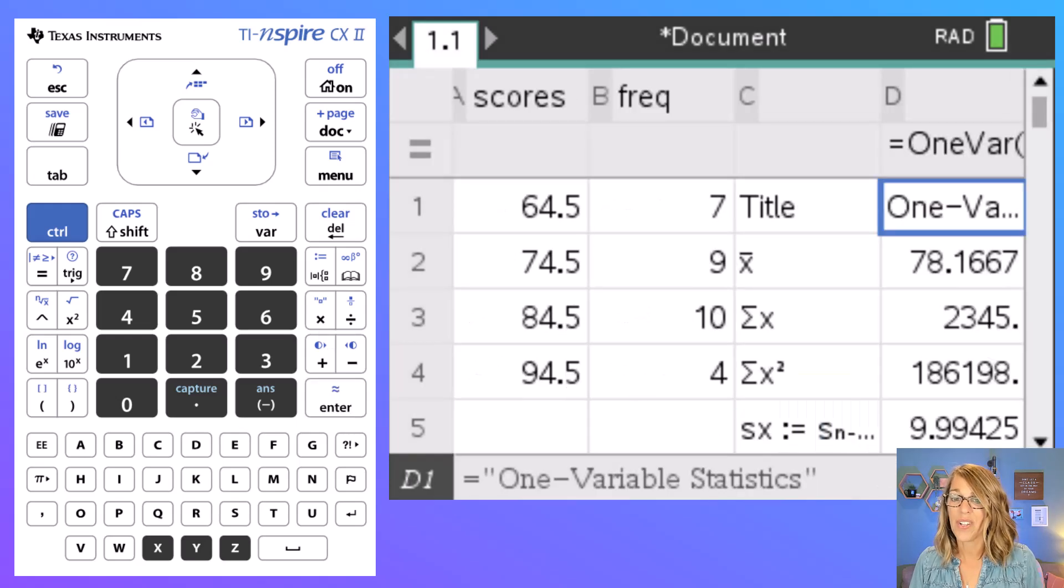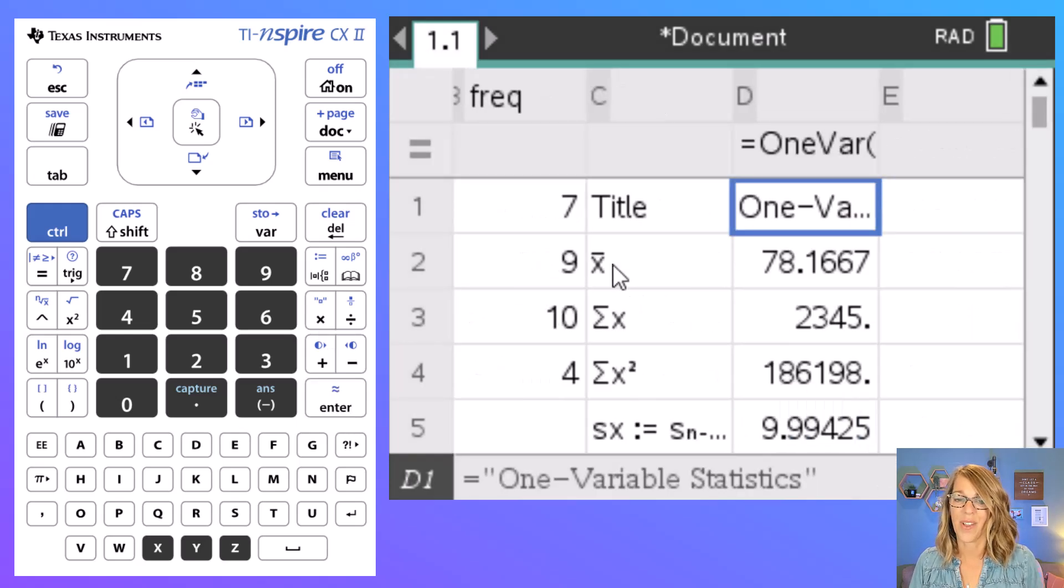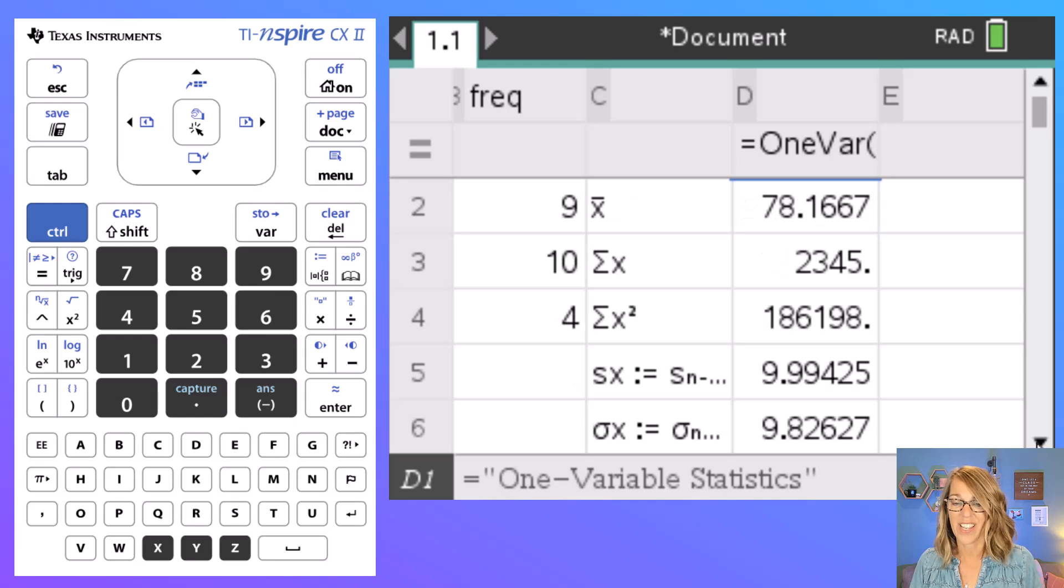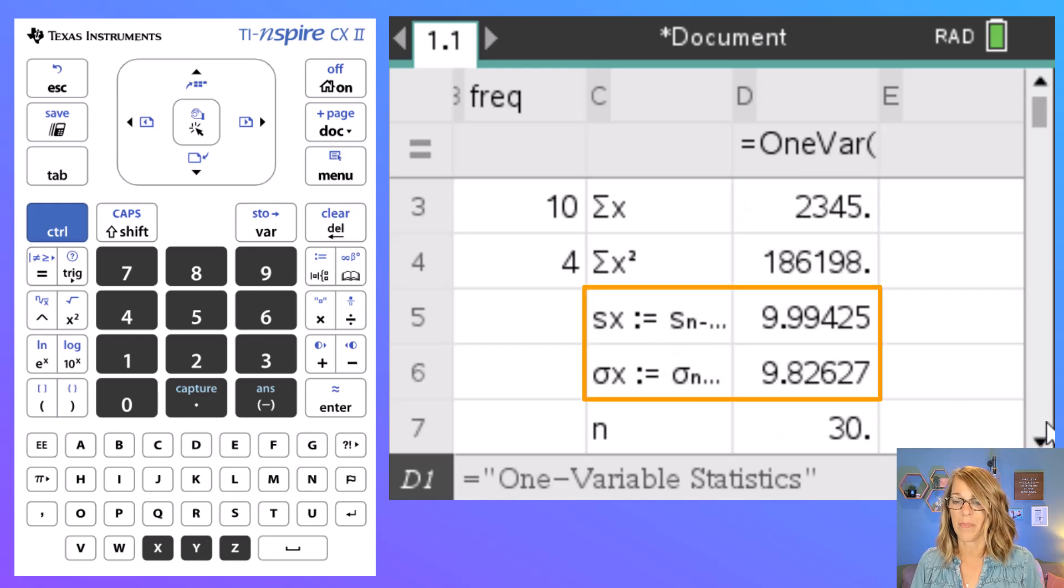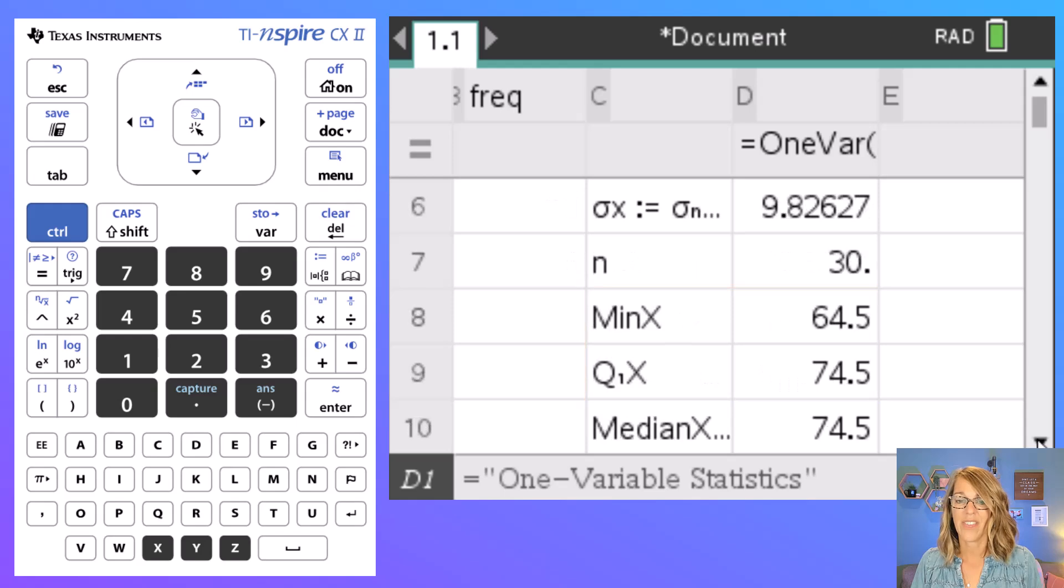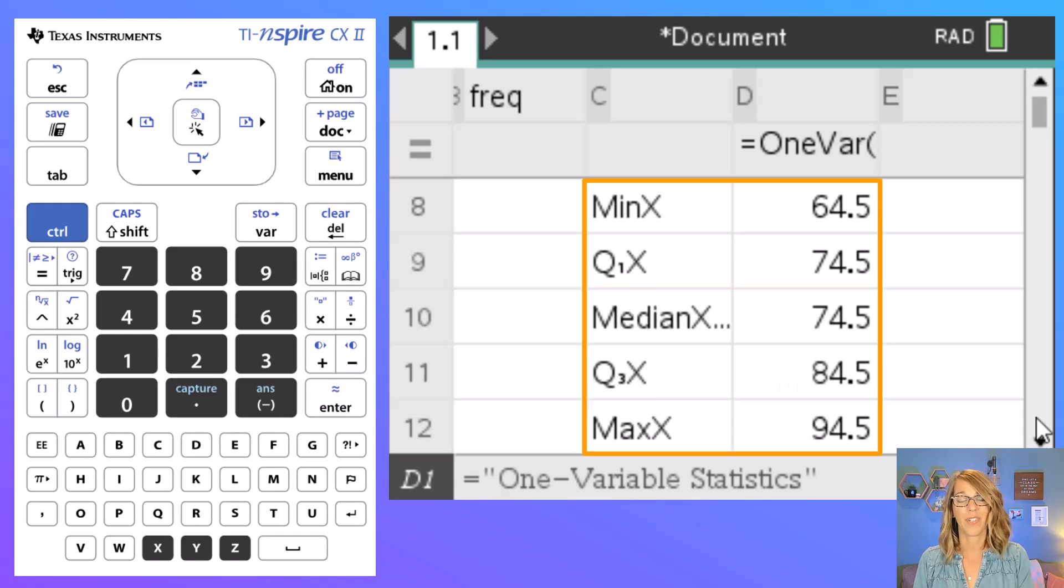Notice it gives me all of these values. So I've got my mean which is that first value 78.1667. I've got my standard deviations—the sample followed by the population standard deviation—and then below that we've got our five number summary.